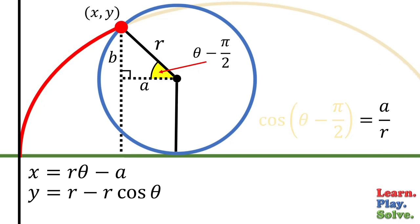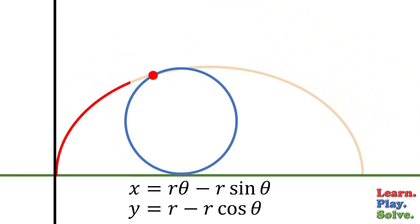So this simplifies to sine theta equals a over r. Solve for a and plug this in, and here we go. The parametric equations for a cycloid.